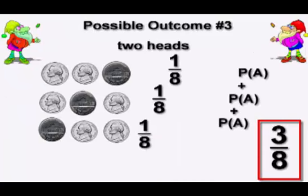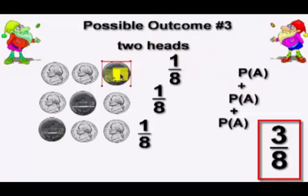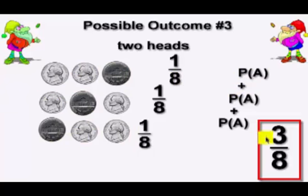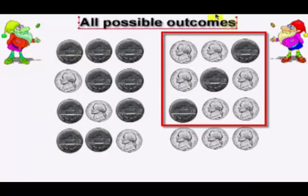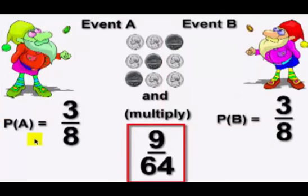Possible outcome number three is they can get two heads in either one of these arrangements — this outcome or this outcome or this outcome. Same thing: you add up the individual probabilities and get three out of eight. We want P(A) and P(B), which means multiply.